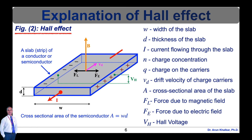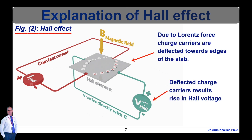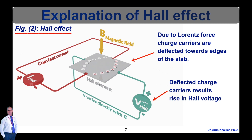This electric field is perpendicular to both the direction of current flow and the magnetic field, as shown in this diagram. The Hall effect is demonstrated in this animated figure. The Hall effect is the generation of a transverse electric field in a solid material when it carries an electric current and is placed in a magnetic field perpendicular to the current. Charge carriers experience a Lorentz force, causing them to deflect towards the edges of the slab. The deflected charge carriers result in a rise in Hall voltage, as shown in the animated figure.